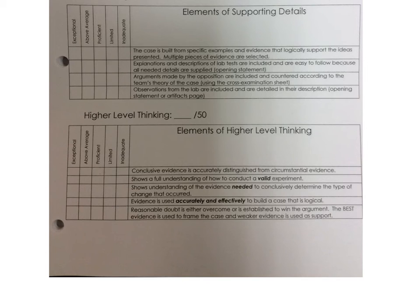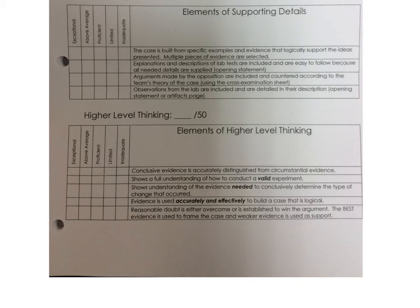The next element shows understanding of the evidence needed to conclusively determine the type of change that occurred. In your opening statement, I really need to see that you understand what it takes to come to a definite conclusion about whether or not the change is physical or chemical. Then, evidence is used accurately and effectively to build a case that is logical. Don't make mistakes — don't tell me something happened that doesn't happen. I saw people write things like 'this turned yellow' or 'gave off a gas,' and I would think, but that doesn't happen. Make sure you're accurately describing what happened and that you know what happened.